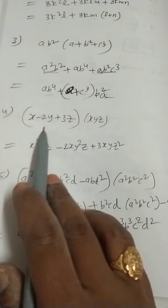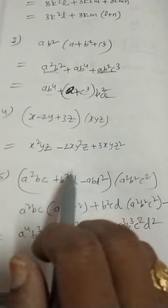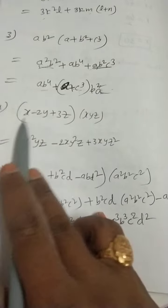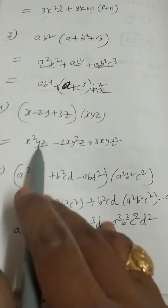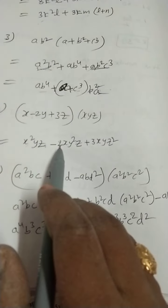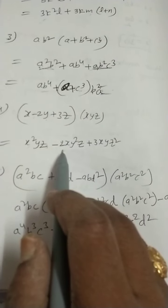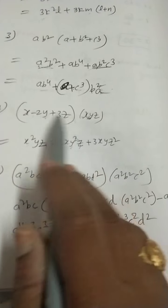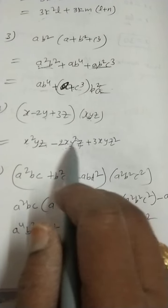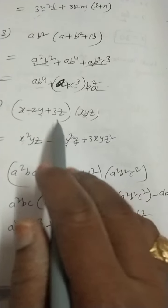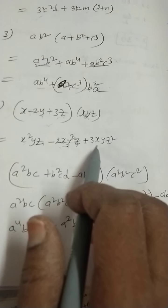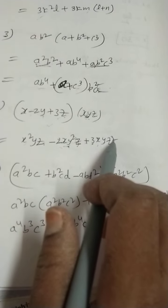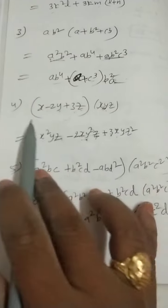Here, first and second, we are finding the product. So, here, x into xyz. So, x²yz minus 2y into xyz is 2xy²z. Why? Because y is here, here. y into y is y². Remaining 2 terms as it is. Plus, 3z into this term. So, 3xyz into z is z². That one, fourth one.